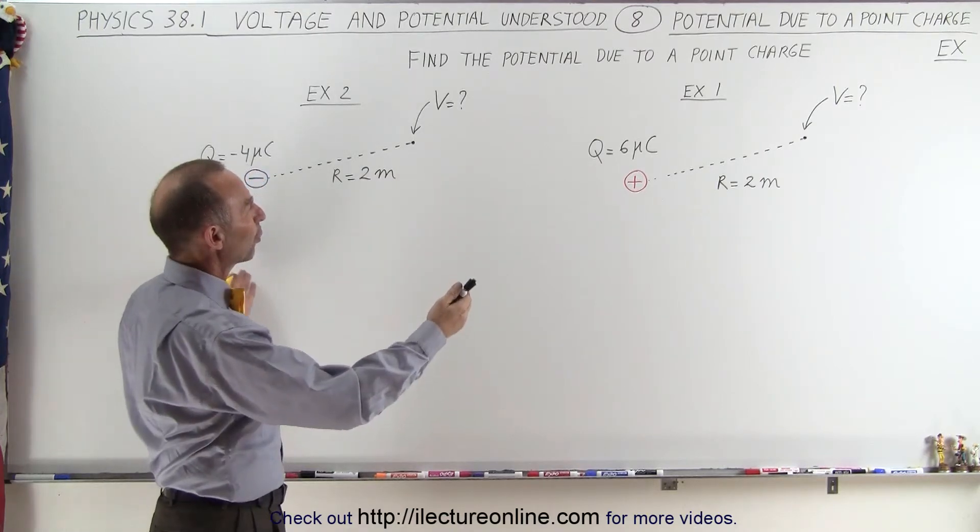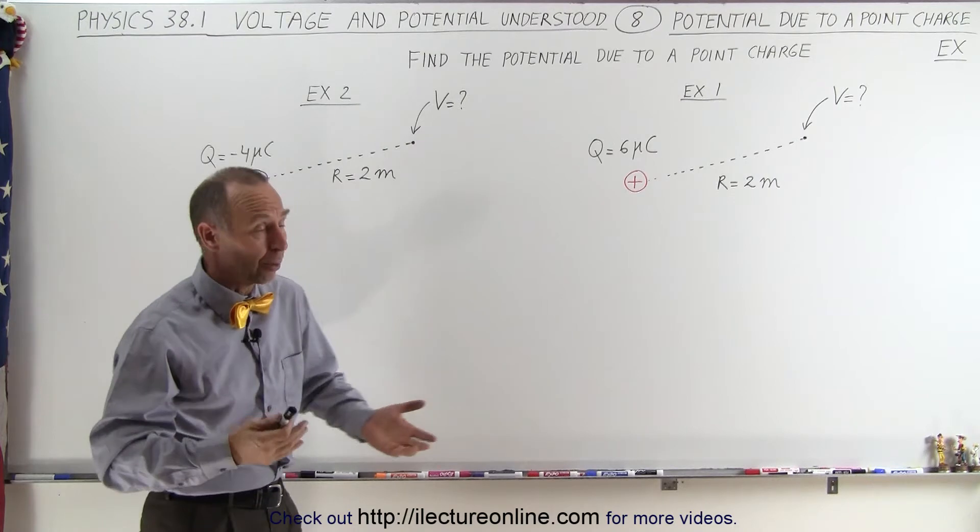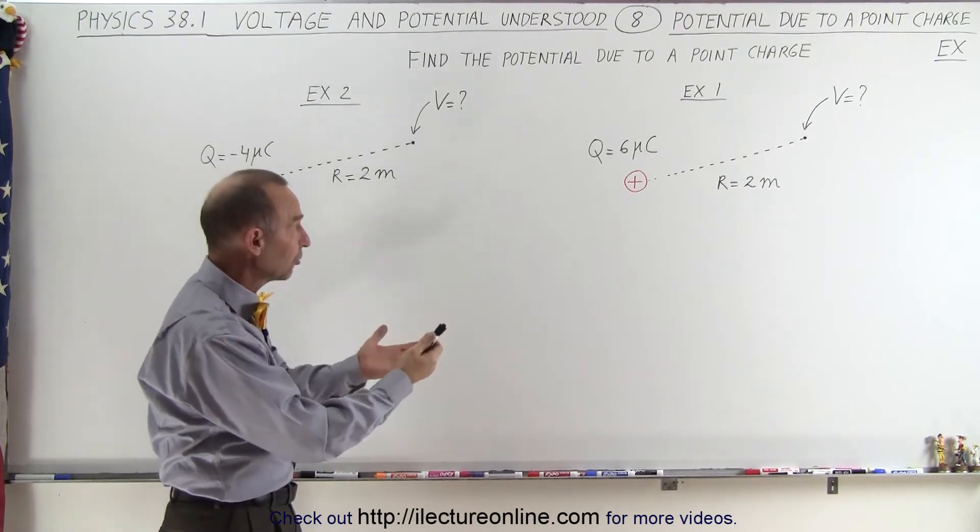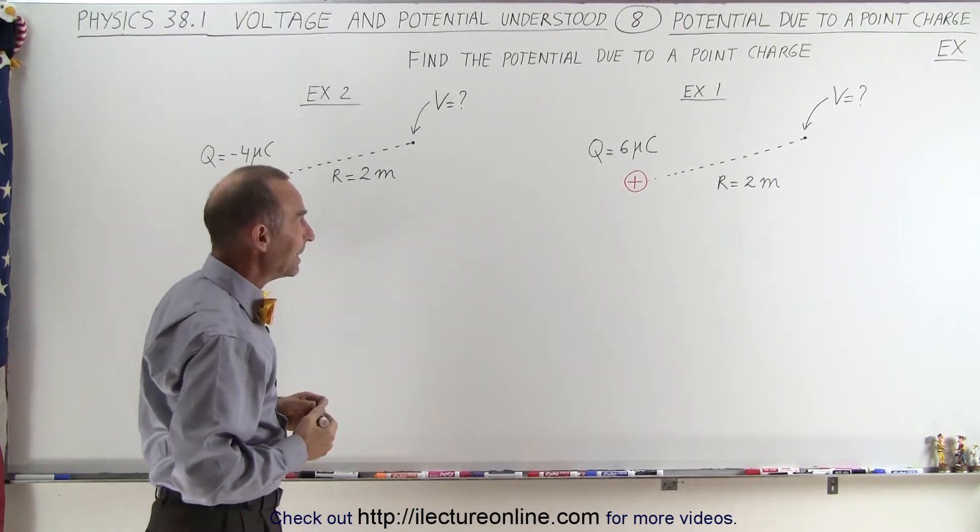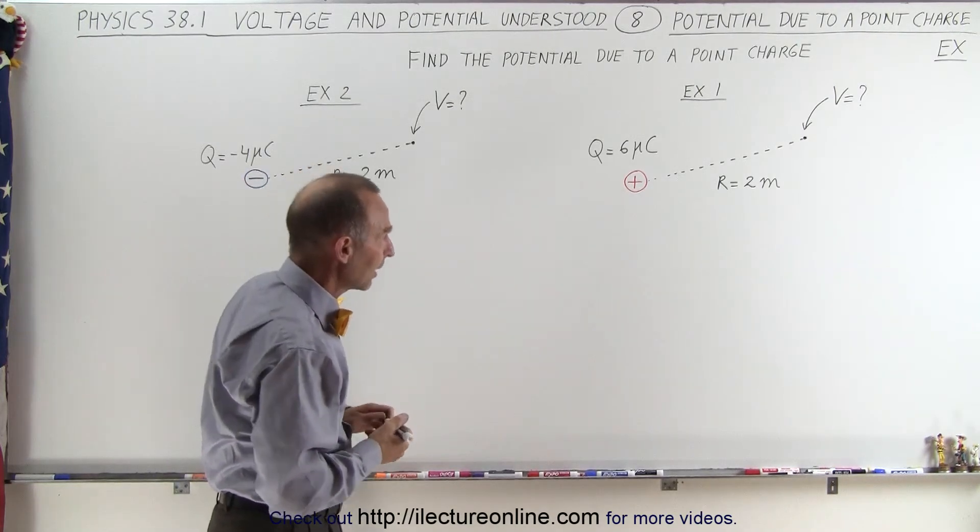We have two examples, one with a positive charge, one with a negative charge, so you can simply see how in one case we'll get a positive potential, in the other case we're going to get a negative potential. These are simple examples, but it always helps to see what an example looks like.